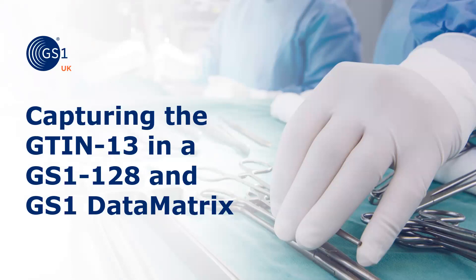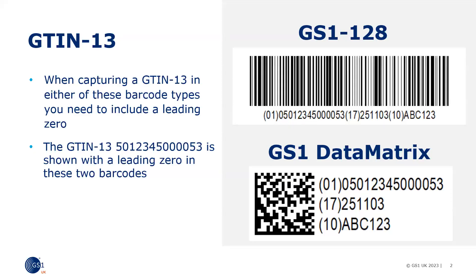This module is about capturing the GTIN13 in a linear GS1-128 barcode and a 2D GS1 data matrix. When capturing the GTIN13 in either of these barcode types, you need to include a leading zero. The GTIN13 is shown with a leading zero in these two barcodes: the linear GS1-128 barcode and the 2D GS1 data matrix.